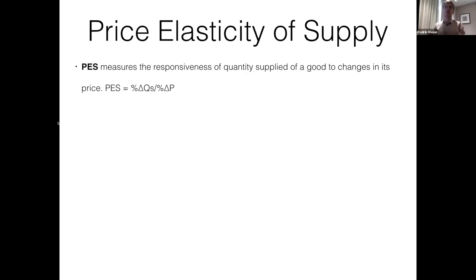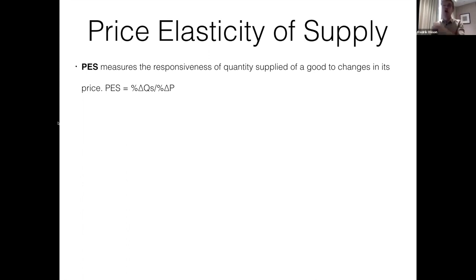Next to the definition there's a quick formula, and it's going to look extremely familiar if you watched those PED videos because it's almost the exact same. PES is equal to the percentage change in quantity supplied — represented by that triangle — divided by the percentage change in price. If you're unfamiliar with how to do this calculation, go back to those PED videos where we talk through exactly how to calculate percentage changes. That's directly transferable over to PES, so I won't repeat those calculations here.